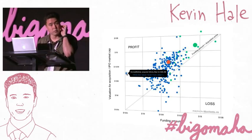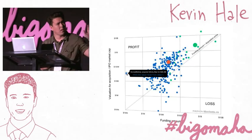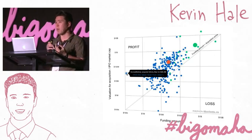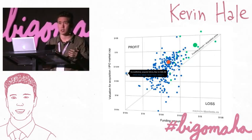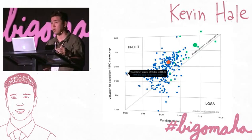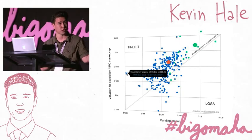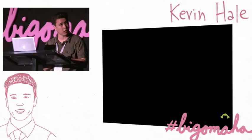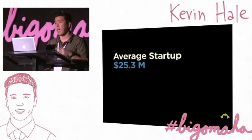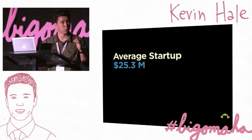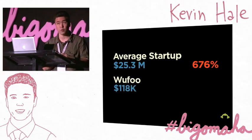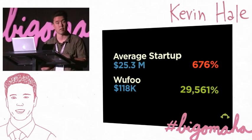This is a graph from TechCrunch that maps companies by how much funding they raised against their acquisition and IPO outcomes. For the most part, everyone follows the traditional line. We are the outlier far off to the left. The average startup along that line raised $25.3 million and returned 676% to investors — really great. Wufoo, however, raised $118,000 total and returned 29,561% back to our investors.